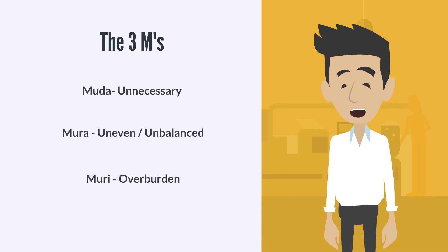Mura, Muri, and Mura are called the three Ms. These three Japanese terms were developed by Taichi Ono to describe different types of wasteful activity.